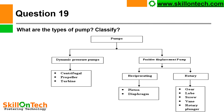What are the types of pumps? Pumps can be generally classified in two categories: dynamic pressure pumps and positive displacement pumps. Dynamic pressure pumps are further classified as centrifugal, propeller, or turbine pumps. Positive displacement pumps are further classified into reciprocating pumps and rotary pumps. Reciprocating pumps include piston or diaphragm pumps. Rotary pumps include gear, lobe, screw, vane, and plunger pumps. This is the general classification of pumps.